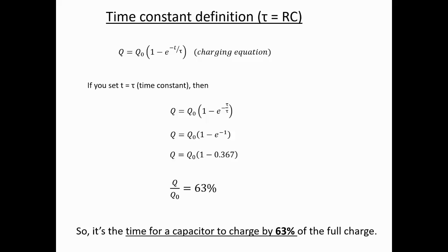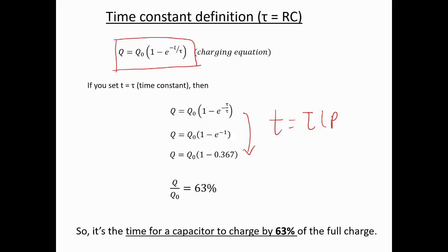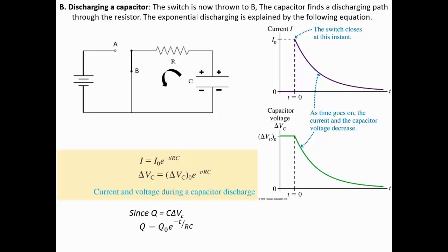Let's define the time constant quantitatively. Starting with the charging equation derived from calculus, if we substitute t = τ (where τ = RC is the time constant), we find that the capacitor charges to about 63% of its full charge. Therefore, the time constant τ = RC is defined as the time required for a capacitor to charge to 63% of its maximum charge.